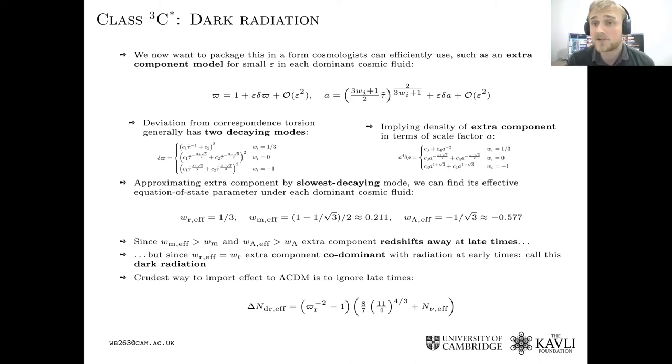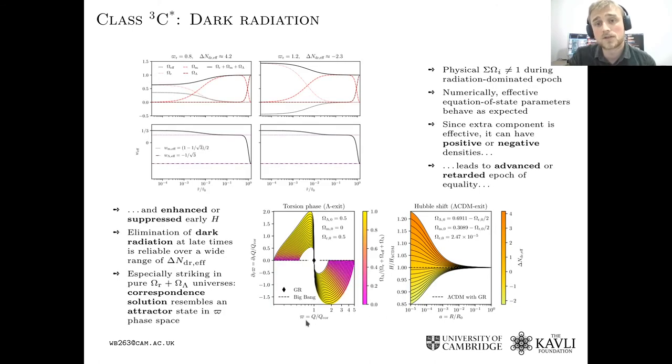And so you can package this effect roughly into an increase in the number of relativistic degrees of freedom in Lambda-CDM. That's what we provide down here. So the consequences of this are that you will boost the early expansion rate, you'll increase the Hubble number, you'll bring forward epochs of equality and recombination, and you'll shrink the sound horizon.